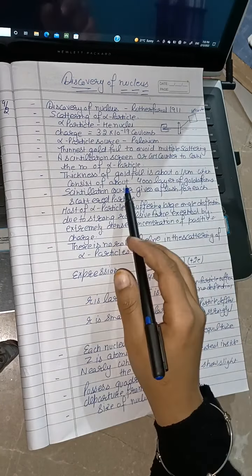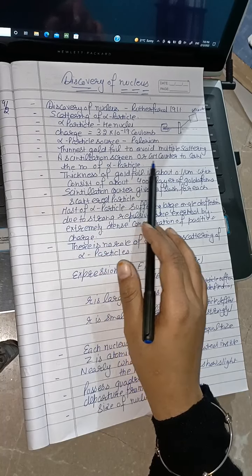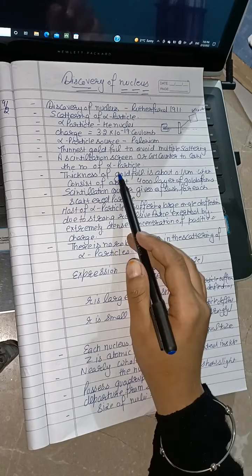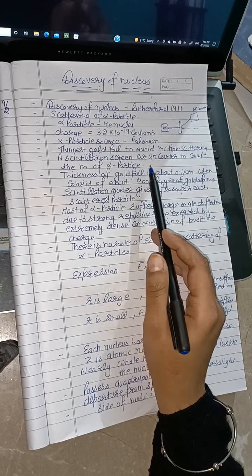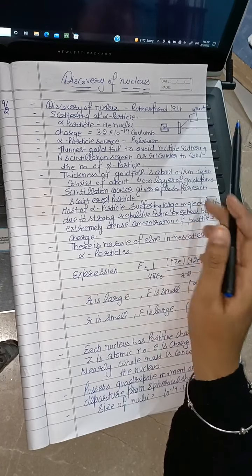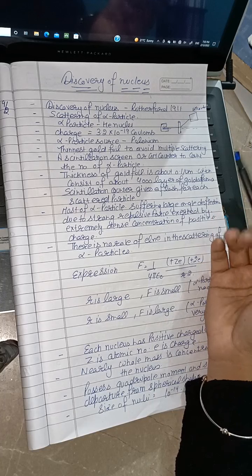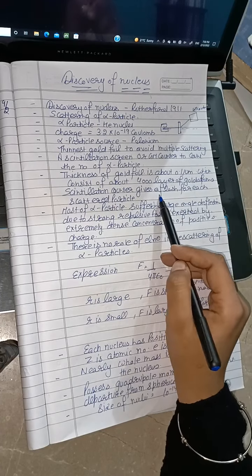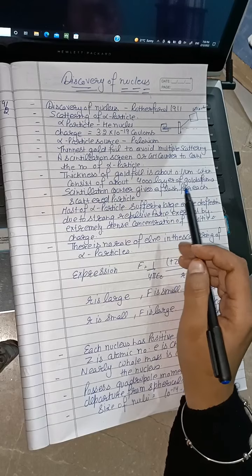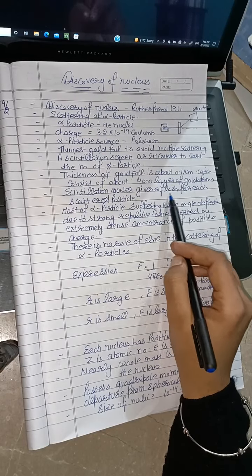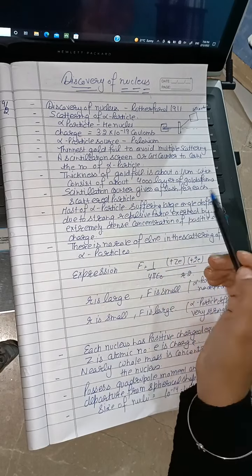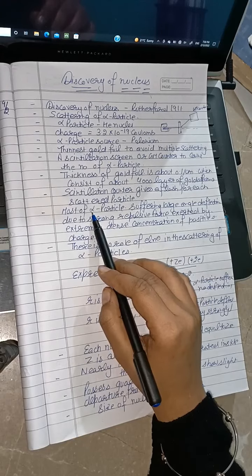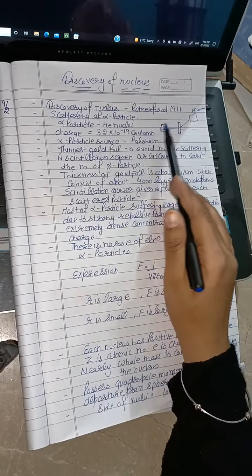Basically, the scintillation counter counts the number of alpha particles emitted. When the alpha particles were counted, a flash was shown for each scattering particle. Many alpha particles passed through without deflection.